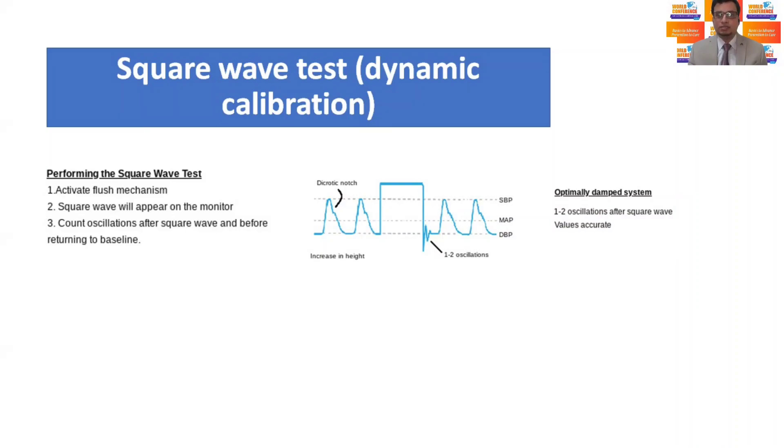The natural frequency of the system may be measured in the clinical settings using the fast flush test or square wave test. The system is flushed with the high pressure saline via the flush system. This generates an undershoot and overshoot of waves resonating at the natural frequency of the system. Now count the number of oscillations after the square wave.